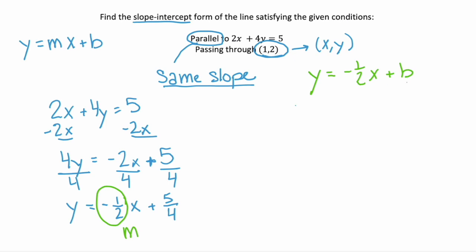So our y is 2. So 2 equals negative 1 half times x, which for our point is 1 plus b. Remember we're trying to solve for b so the b stays there until we can isolate it. So simplify the right hand side. Negative 1 half times 1 remains as negative 1 half plus b.